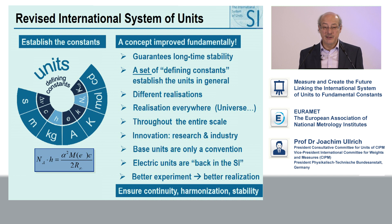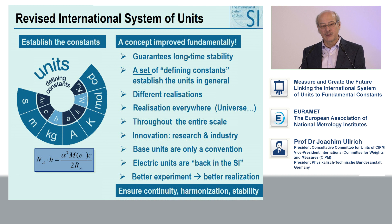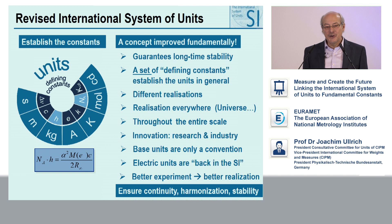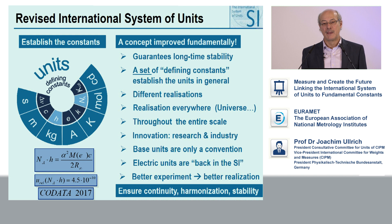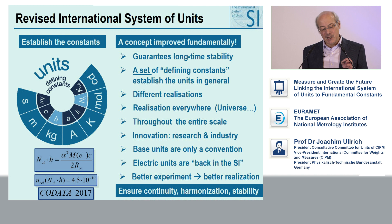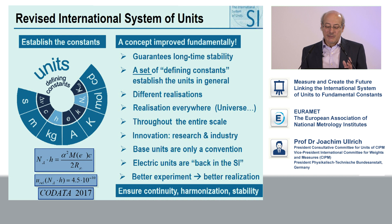Now we come to the Planck constant and the Avogadro constant — the most difficult ones. The Planck and Avogadro constants are connected via an equation, and on the right-hand side we have the fine structure constant alpha, the molar mass of the electron, the speed of light, and the Rydberg constant. We know the right-hand part very well — on a level of 4.5 times 10 to the minus 10. This means that whenever we measure one or the other — the Planck constant or the Avogadro constant — we know the other one with this uncertainty at least.